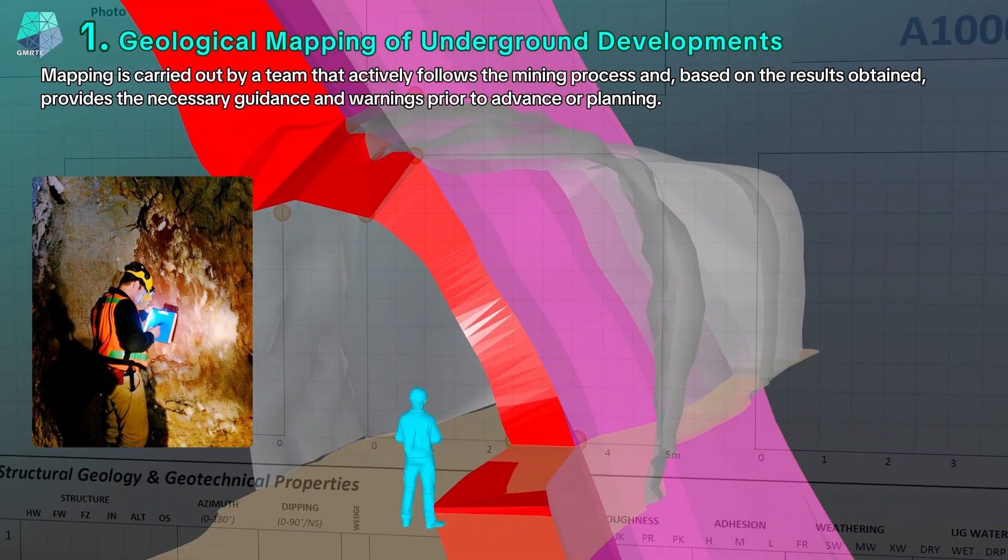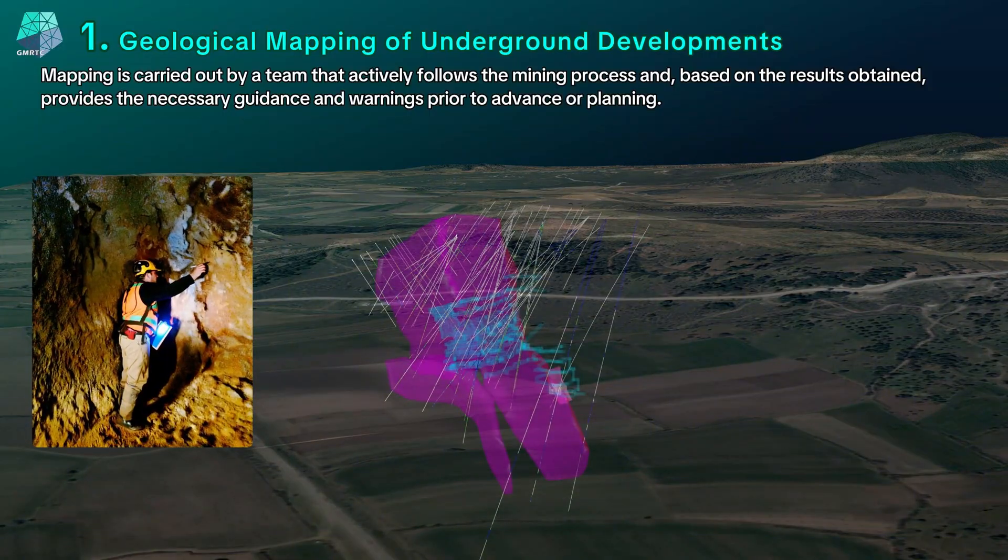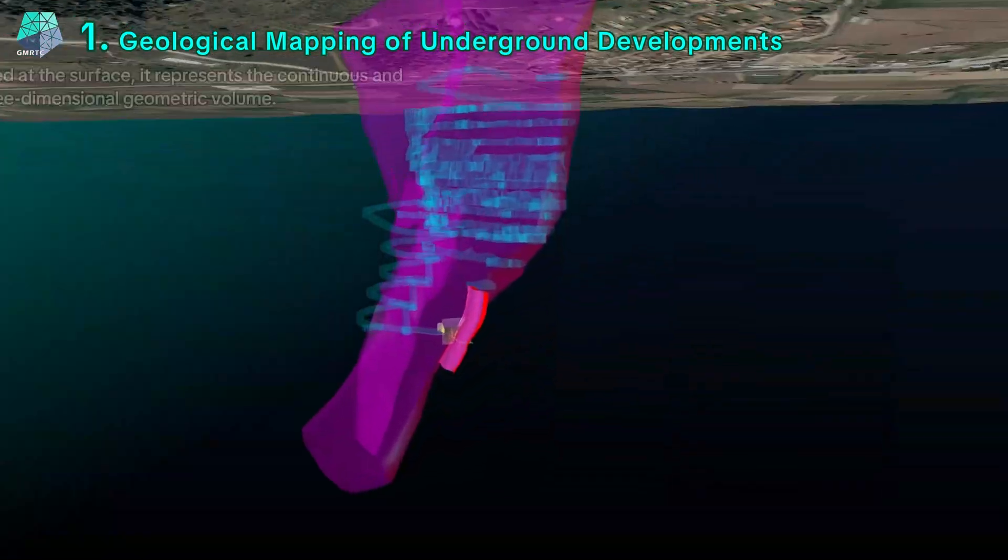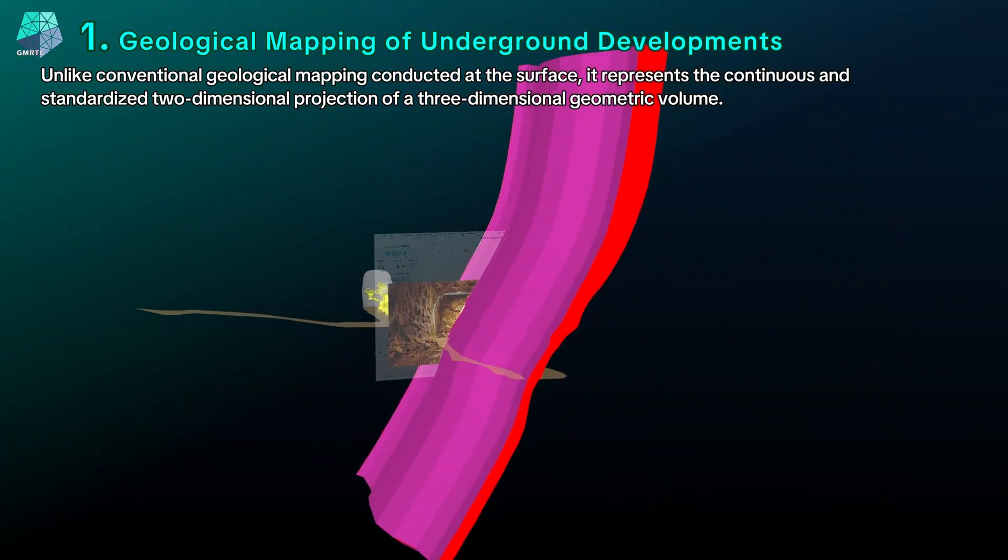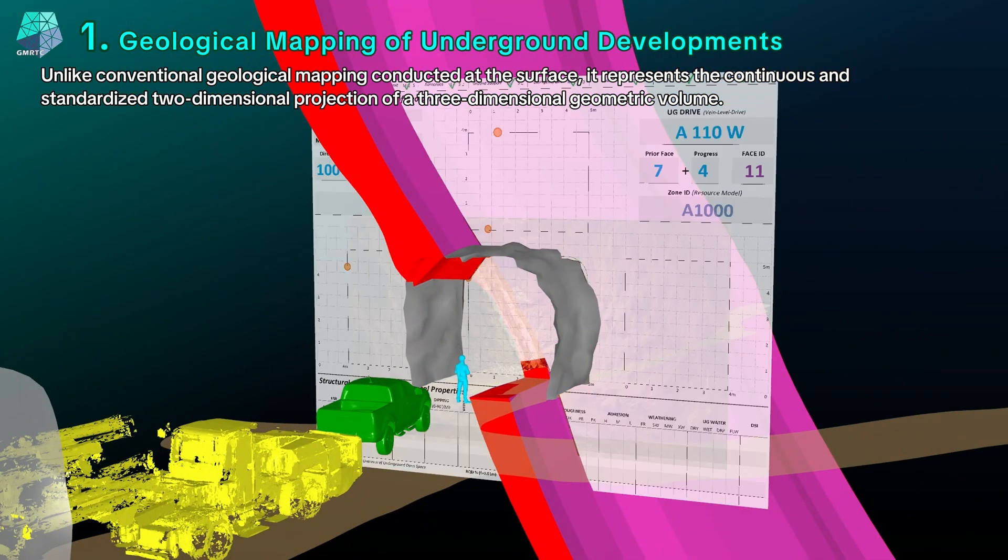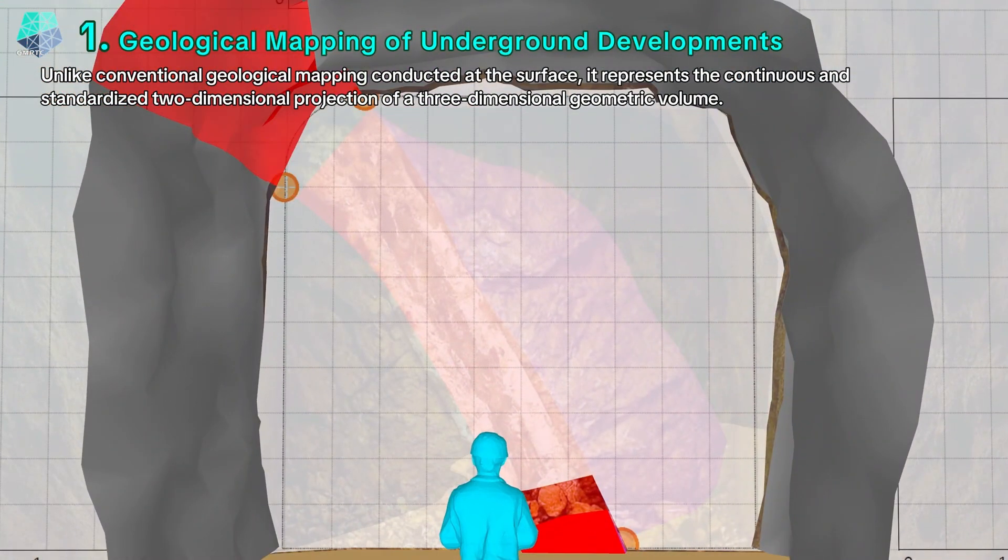Mapping is carried out by a team that actively follows the mining process and, based on the results obtained, provides the necessary guidance and warnings prior to advance or planning. Unlike conventional geological mapping conducted at the surface, it represents the continuous and standardized two-dimensional projection of a three-dimensional geometric volume.